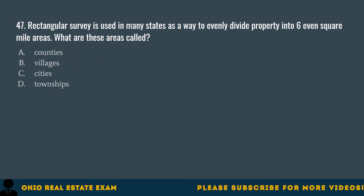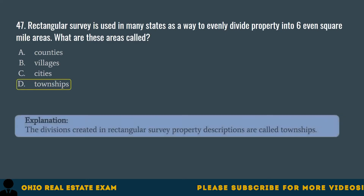Question 47. Rectangular Survey is used in many states as a way to evenly divide property into six square mile areas. What are these areas called? A. Counties. B. Villages. C. Cities. D. Townships. The correct answer is D. Townships. The divisions created in Rectangular Survey property descriptions are called townships.